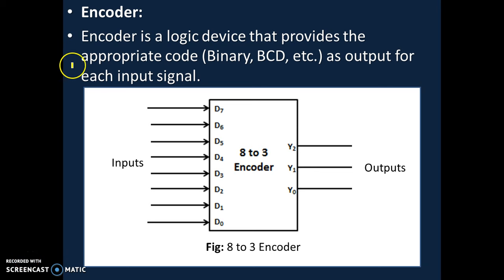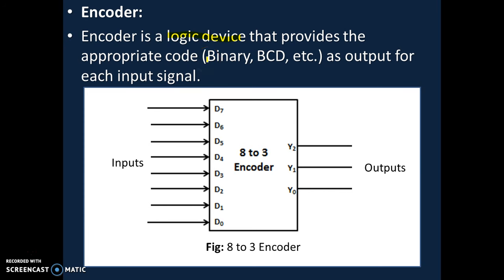Hello friends. Today we are going to see the concept of encoder. Encoder is a logic device — a device which works on logic levels. There are two logic levels: Logic 0 and Logic 1. Logic 1 means ideally plus 5V, Logic 0 ideally 0V. So encoder is a logic device that provides the appropriate code — binary or binary coded decimal — as output for each input signal.